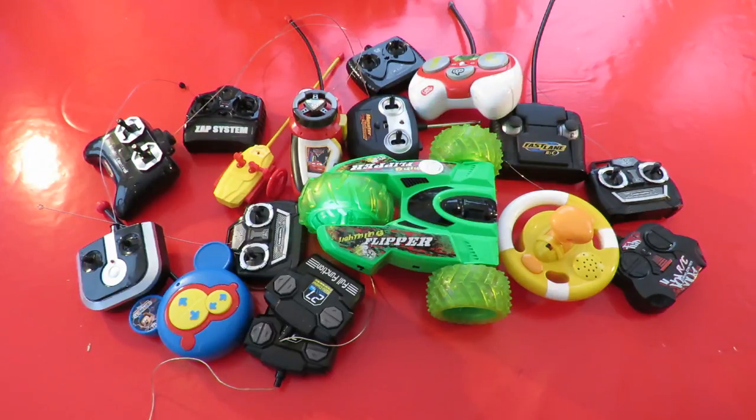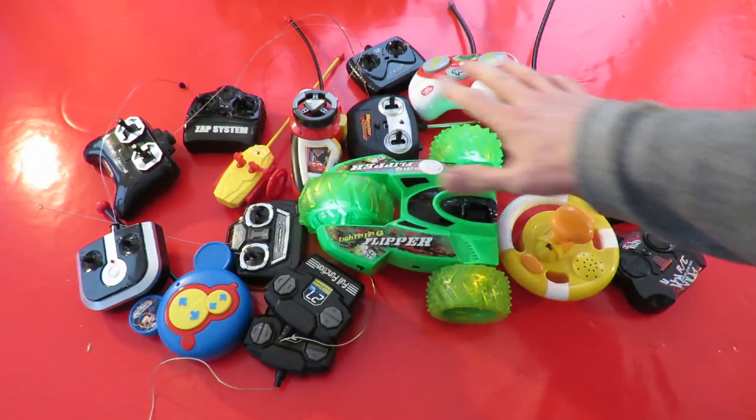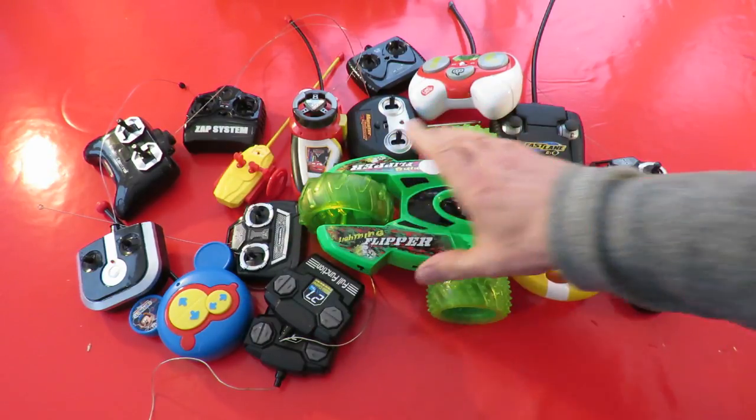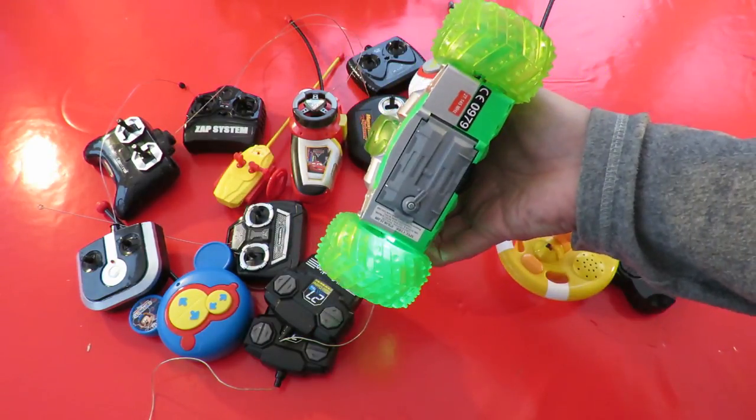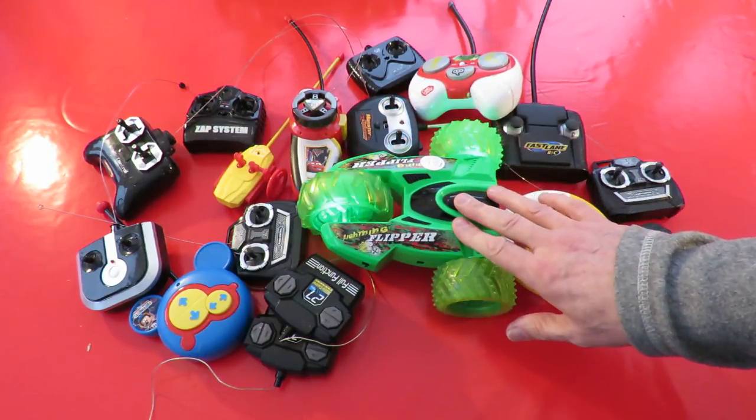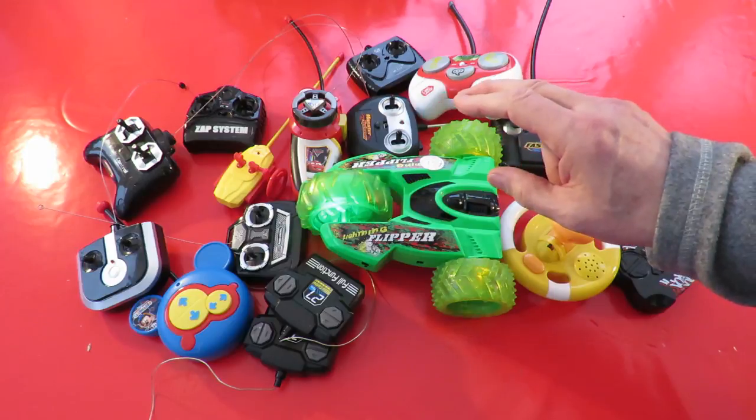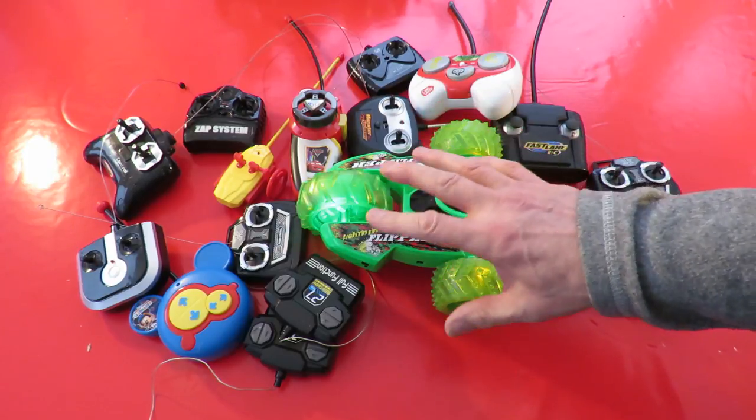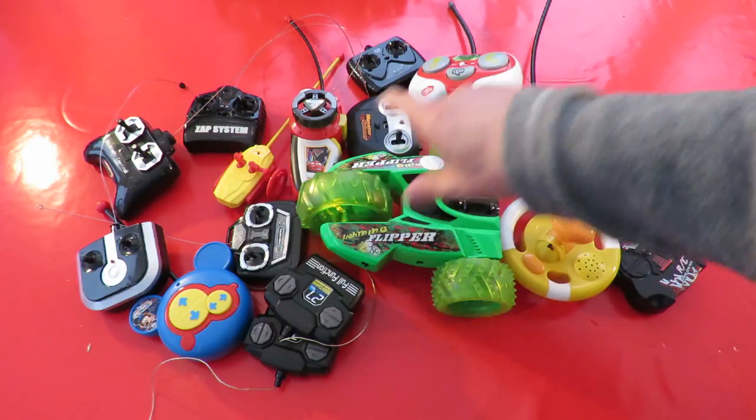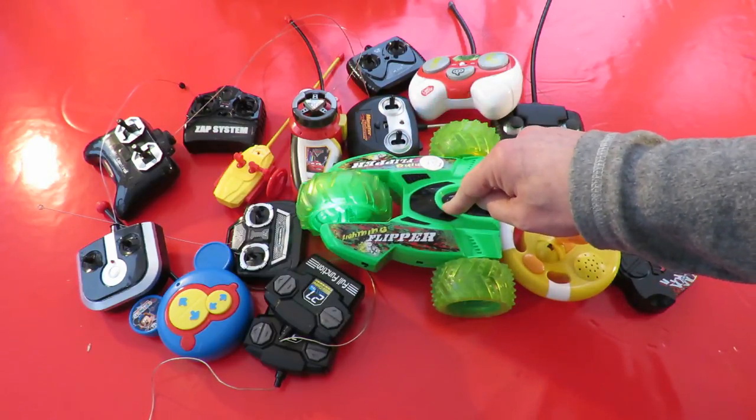Well, I've done my usual. I've tried it with all my spare transmitters. These are all 27 MHz because it says 27 MHz on the back. None of them talk to it. So either it's just a different receiver chip that doesn't understand any of these transmitters, or it's 40 MHz.